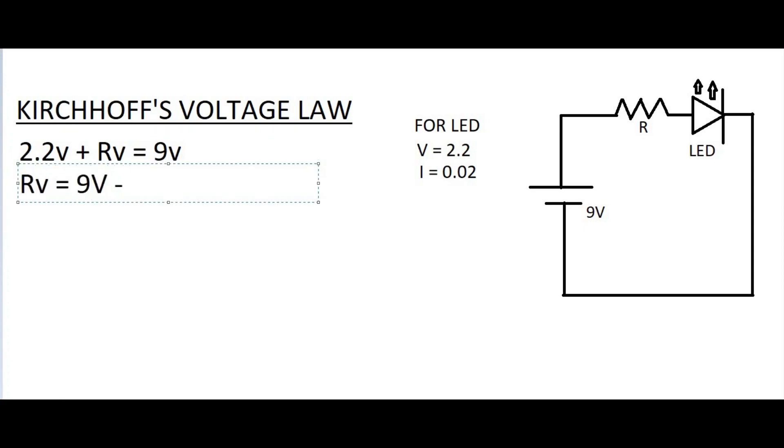By solving this algebraic equation, we get the value as 6.8V. So this voltage should be dropped across the resistor.